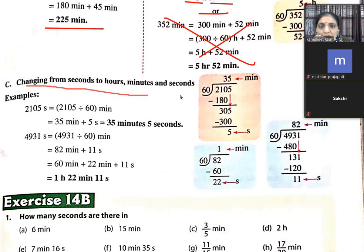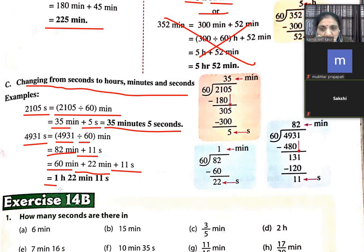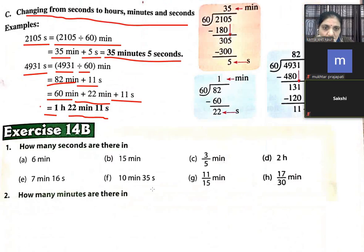Changing from seconds to hours, minutes and seconds — example: 2105 seconds ÷ 60 = 35 minutes and 5 seconds. Similarly, 4931 seconds ÷ 60 = 82 minutes and 11 seconds. Since 82 minutes = 60 + 22, that becomes 1 hour, 22 minutes, and 11 seconds.